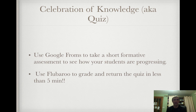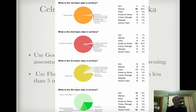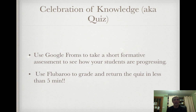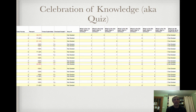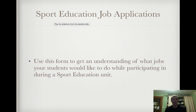You've got a celebration of knowledge — the quiz using Google Forms. It's a short formative assessment to see how students are progressing. I highly suggest using Flubaroo to grade and return the quiz in less than five minutes. Here's a basic archery quiz — I can quickly look at what steps students were struggling at. With 210 students in seventh and eighth grade, it's graded and sorted by hour. I email them their results in less than five minutes with a couple clicks of a button. Check out Flubaroo.